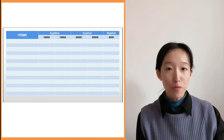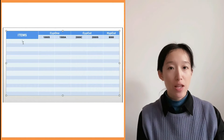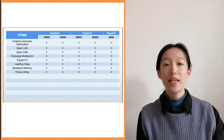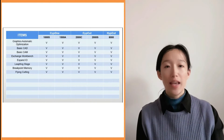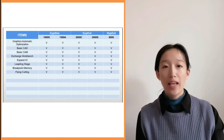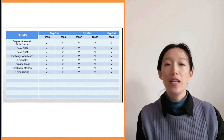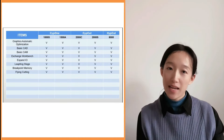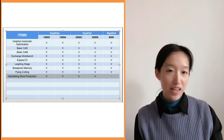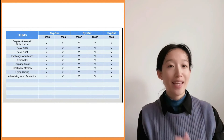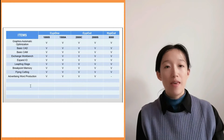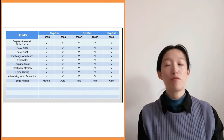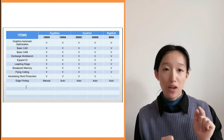The last part is the software capability. First are the functions available for all SafeCat versions: graphics automatic optimization, basic CAD function, basic CAM function, exchange workbench, expand IO, leapfrog, stage breakpoint memory, and flying cutting. The advertising word production is not available in the 8000 system. The ad funding method is automatic except for the 1000, which is manual.